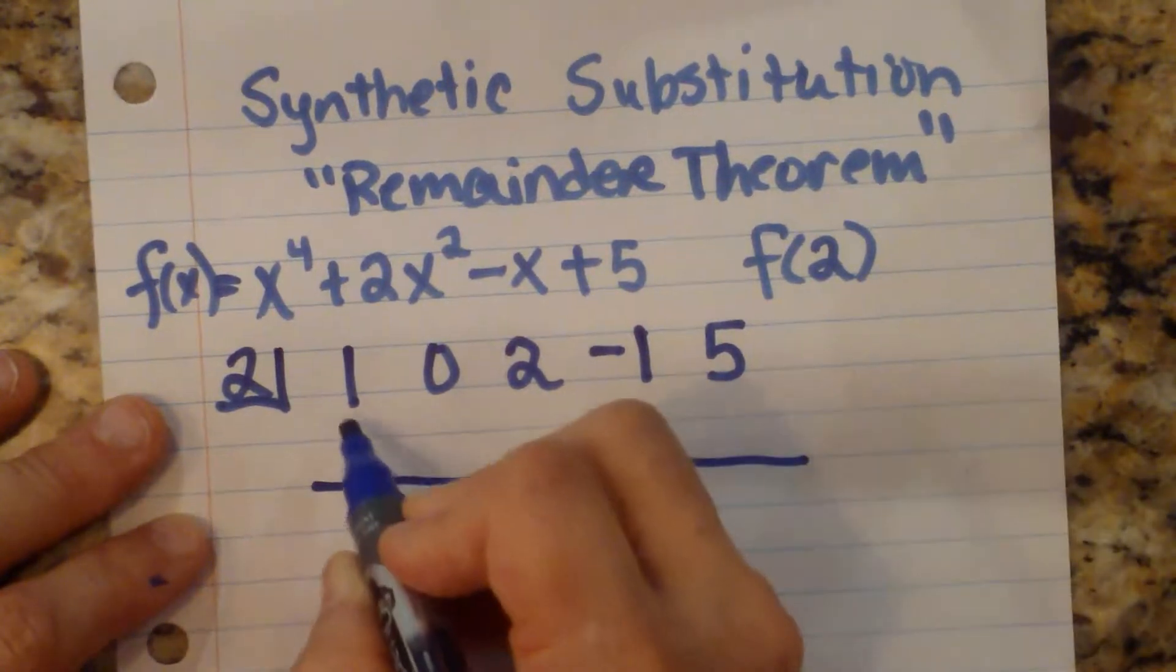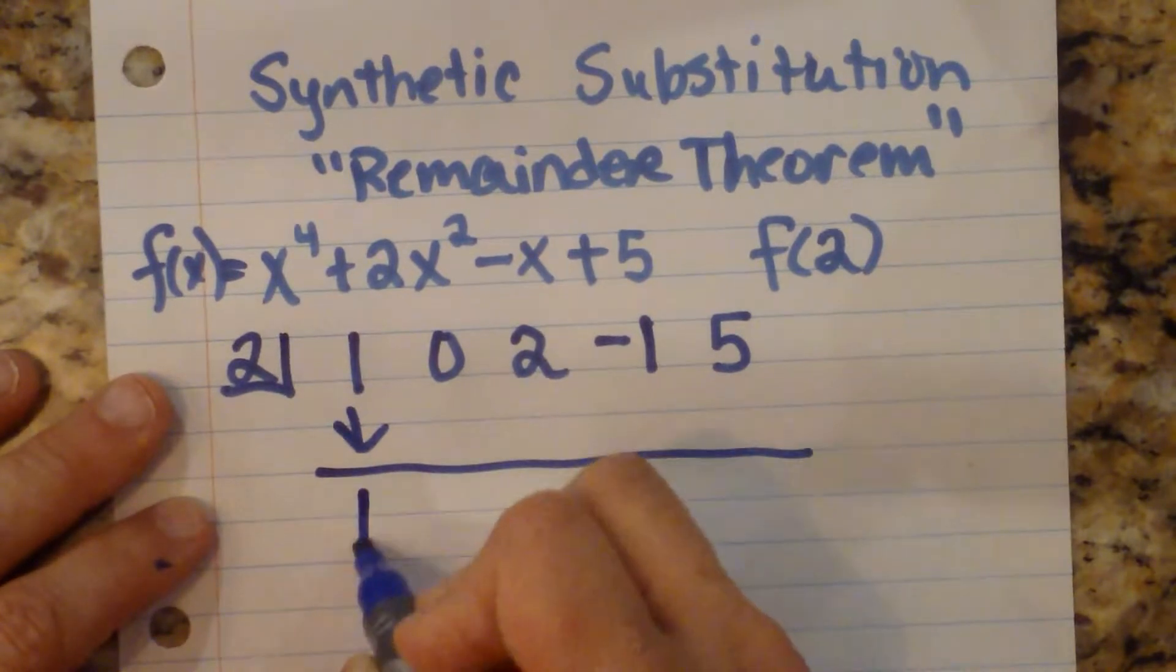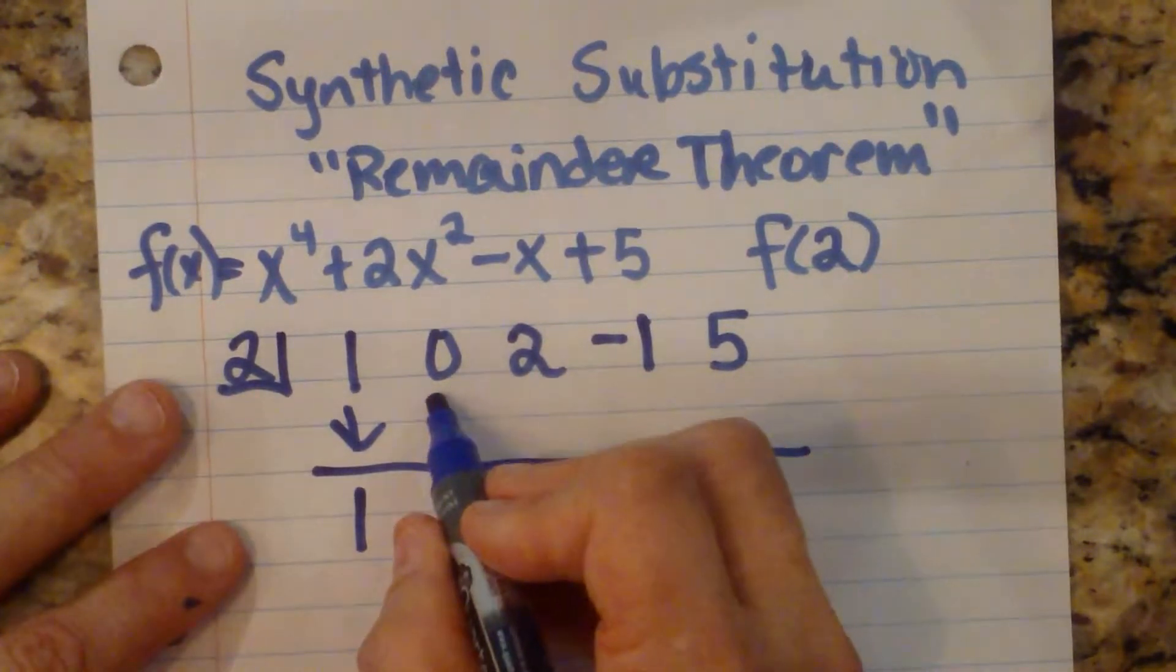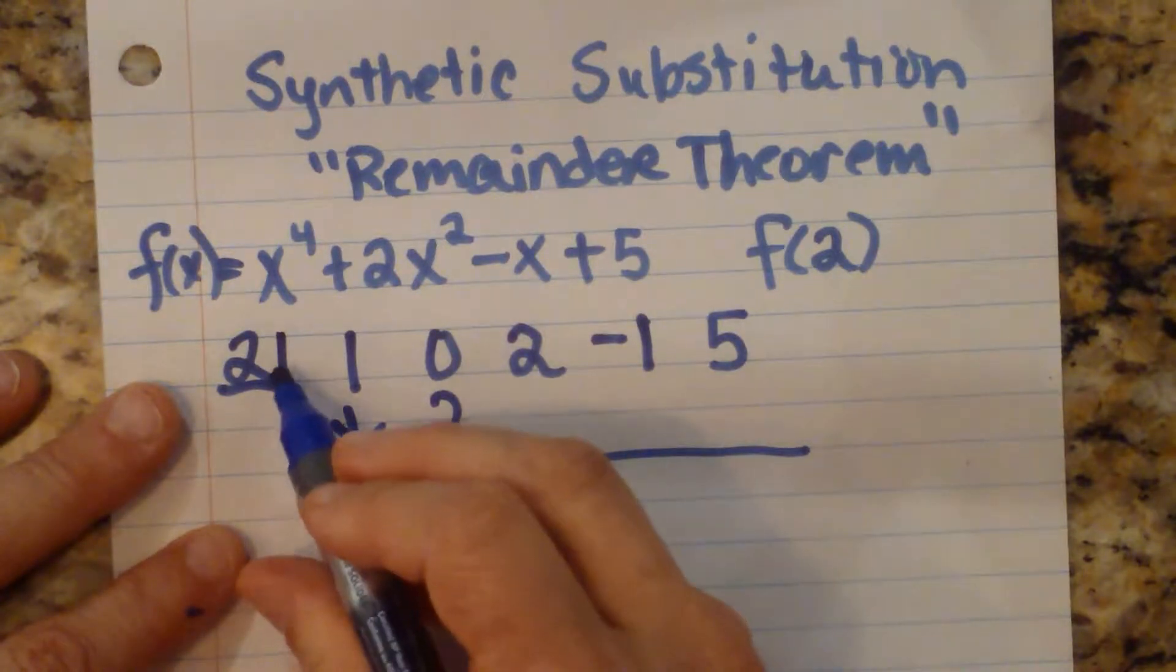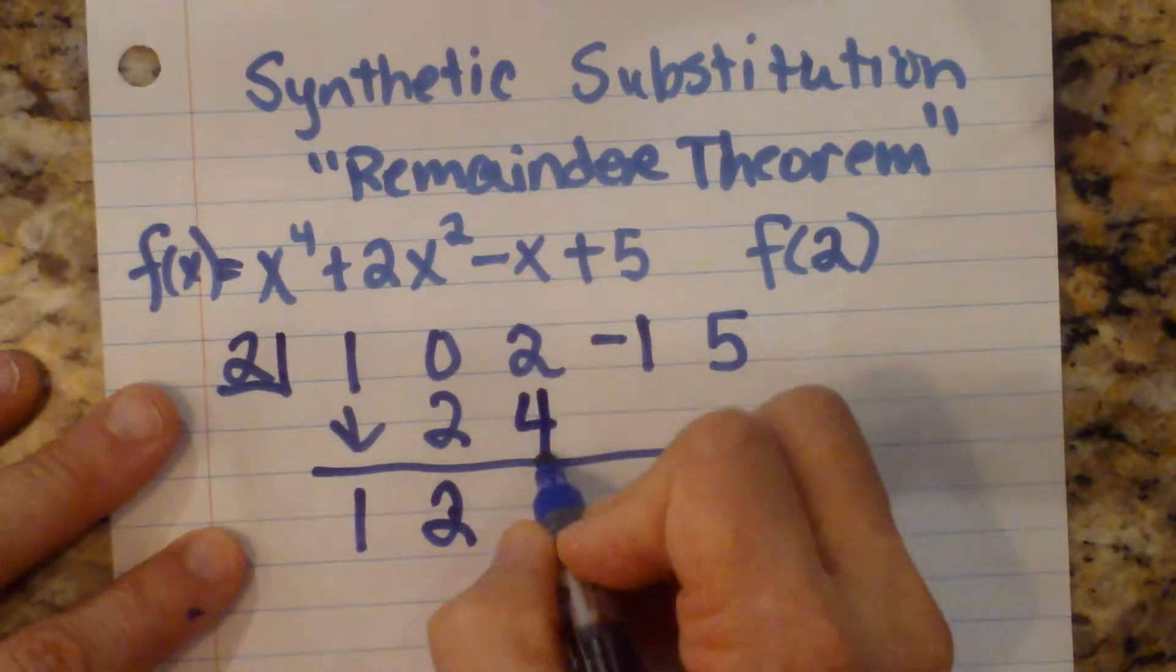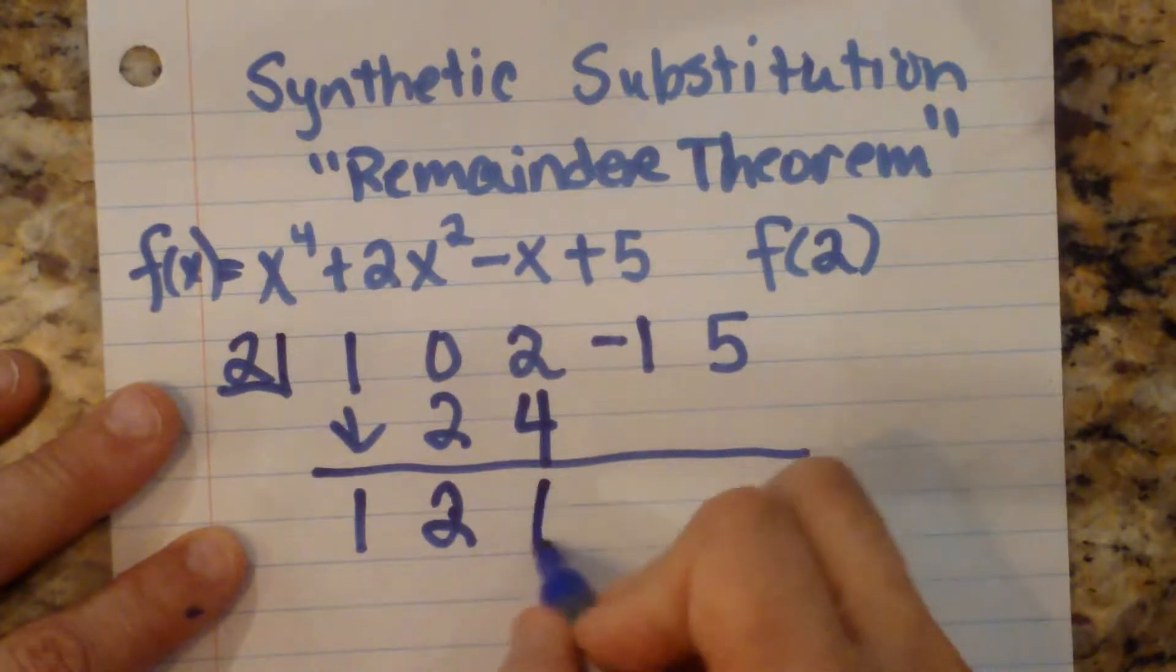Now for synthetic division, we're going to bring down the 1, multiply by 2, and then add the column to get 2. We're going to multiply by 2. That gives us 4. We're going to add the column to get 6.